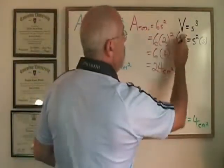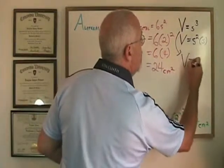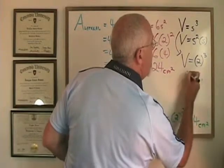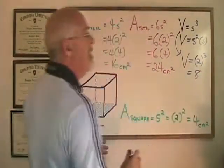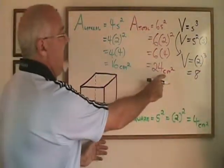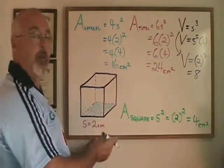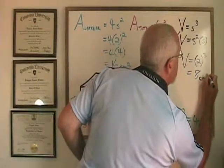Filling in this formula, the side length is 2. So s cubed becomes 2 cubed. And 2 cubed is 8. And because it is volume and the distance measurement was centimeters, the unit of measure will be centimeters cubed.